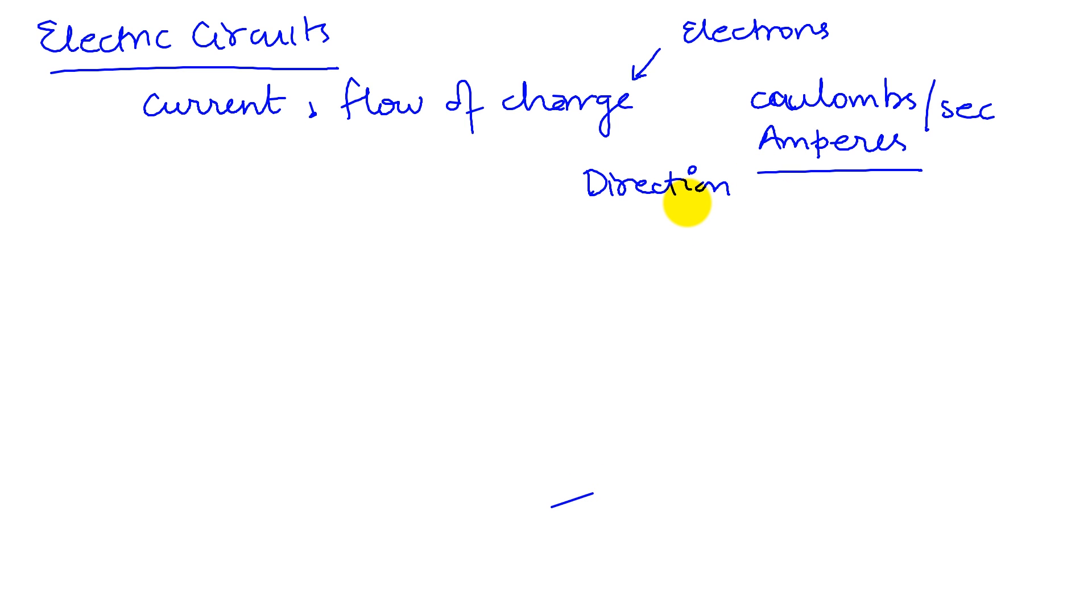And so, when we talk about current, we're always talking about the flow of current, that it makes sense to talk about the direction in which current flows. So, through a conductor, we say that current flows in some direction.